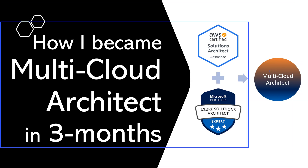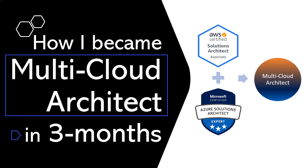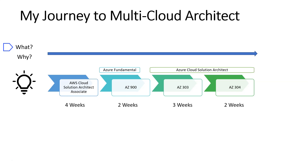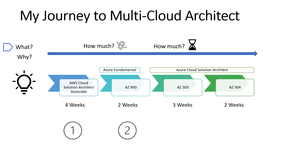Hi all, let's talk about how I became a multi-cloud architect in just three months. In this video, I'm going to cover my entire journey, starting from what is multi-cloud and why it is important. I'll also cover the full step-by-step process, how much it cost, and how much time and effort I put in. I took four steps: AWS Cloud Solution Architect Associate, AZ-900, AZ-303, and AZ-304.